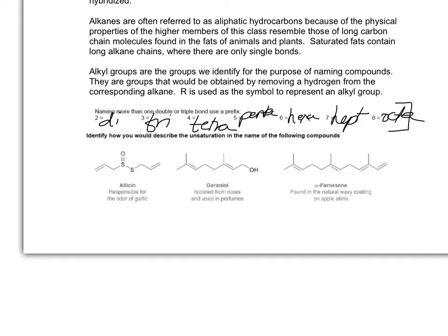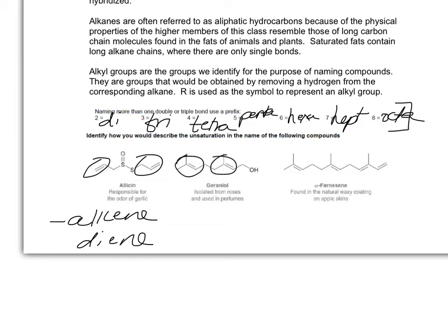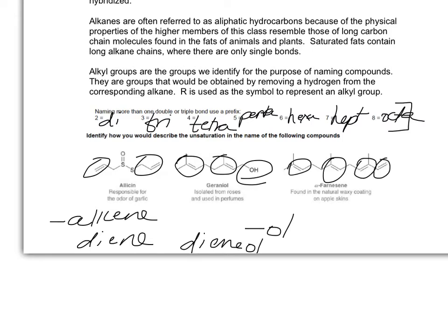Now, if we look at the compounds below, the first compound has two alkenes, so it would be a diene. The next compound, geraniol, has two double bonds and an alcohol. The highest priority would be the alcohol, so the ending would be -ol, but right before that, because we have two double bonds, it would be -dien-ol. Then finally, the last compound has four triple bonds, so it would be a tetrayne.